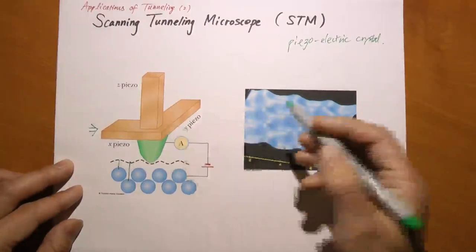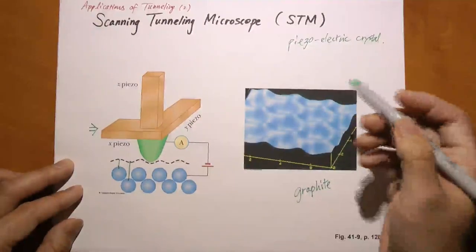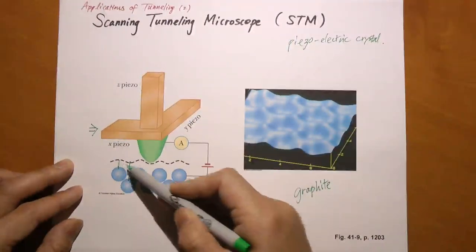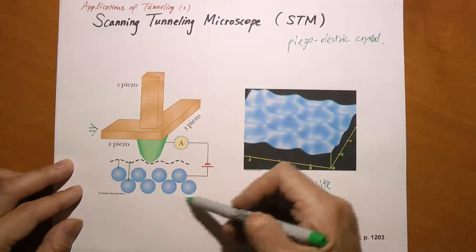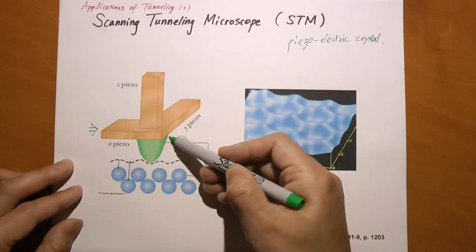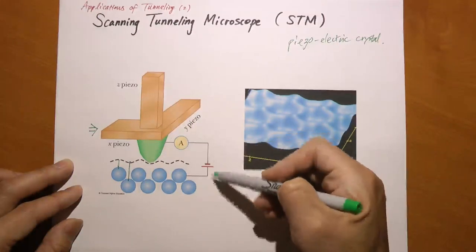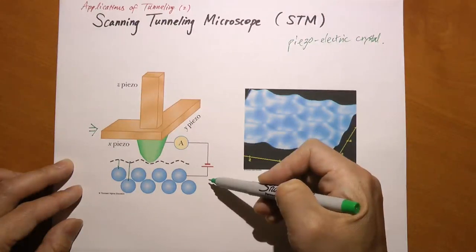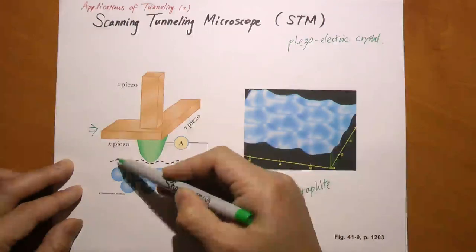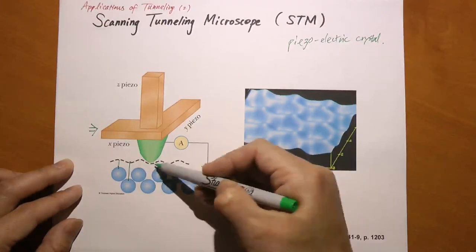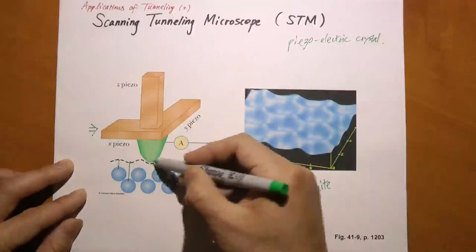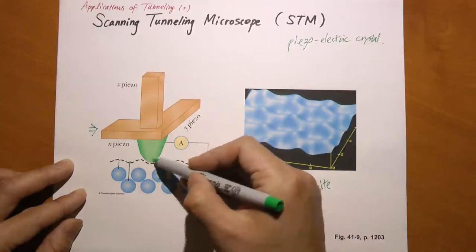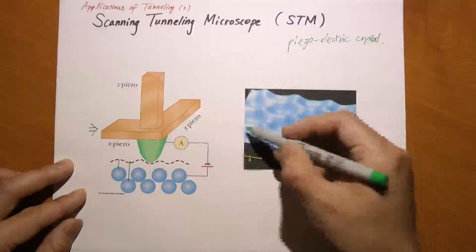The electron has to tunnel through with finite amplitude, and this amplitude depends exponentially on the width of this gap. There is an exponential difference between the tunneling rate at different widths, and the tunneling rate is directly proportional to the current that you gather. So by measuring this current, we can find how this gap varies, how this width varies, and this gives you a profile on the surface - how close this tip is to the surface of this atom.